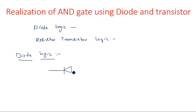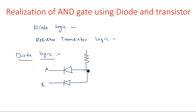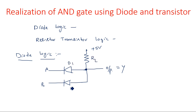In diode logic, the diodes must be connected in reverse direction — that means N should be connected at the input side and P should be connected at the output side. The output must be taken between this junction and the VCC. The output may be +5 volts, and there is a load resistance RL. Diodes D1 and D2 form the realization of AND gate using diode logic.